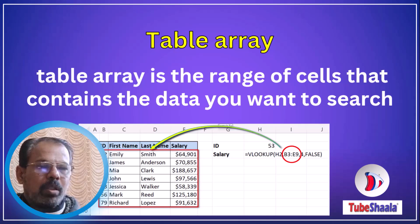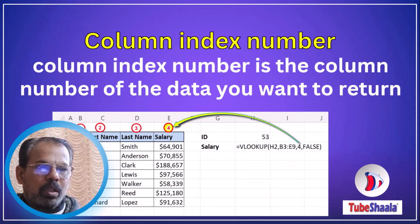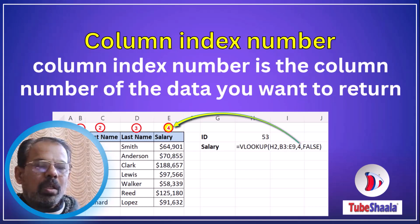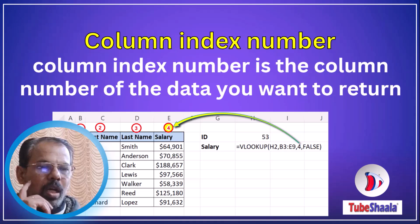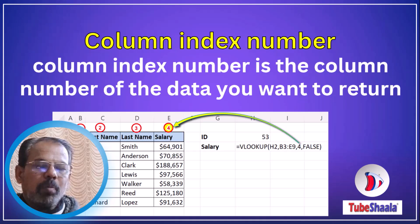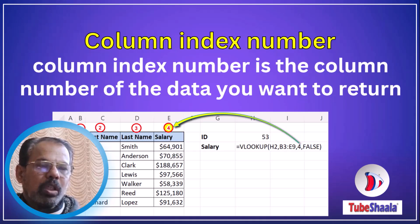The column index number is the column number of the data you want to return. In this particular case, our data for salary is lying in column number 4, starting from the first column of the table, which is the column having the employee ID. So here we put in 4 as the column index number.